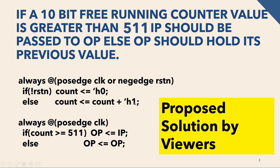Else count will increment its value by one, because our counter is a free running counter. Then always at positive edge of clock: if count is greater than or equal to 511 — we use 'greater than or equal to' because count is calculated in the previous block and takes one cycle of delay — output should equal input IP, else output should equal its previous output.